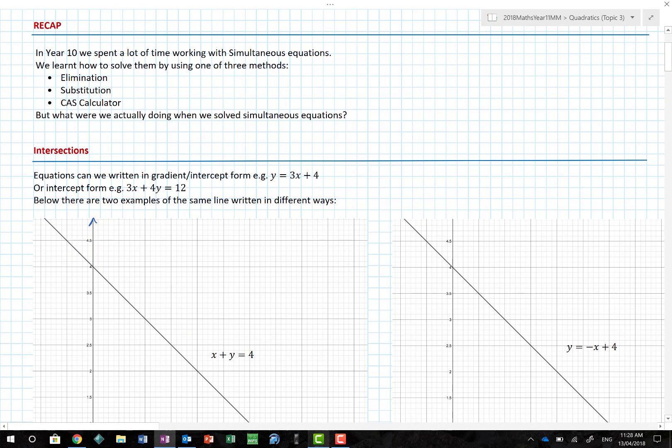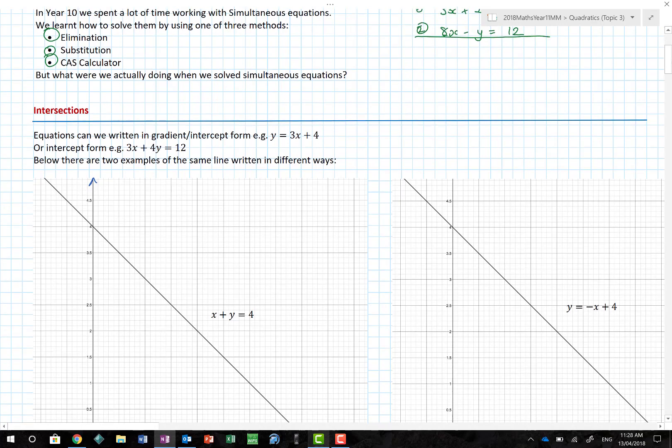In year 10 we have spent a lot of time working with simultaneous equations. Those are horrible equations where you would have had 3x plus 2y equals 6 and 8x minus y equals 12. You would be asked to solve them by elimination, substitution, or by the CAS calculator. But what were we actually doing when we solve simultaneous equations?